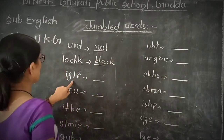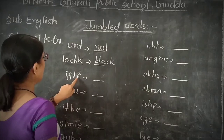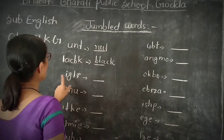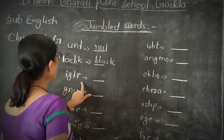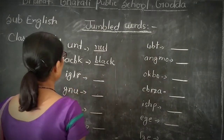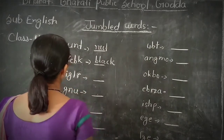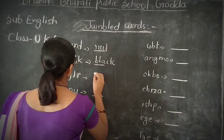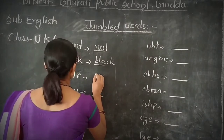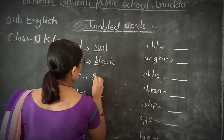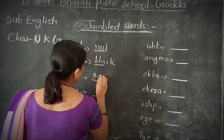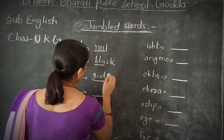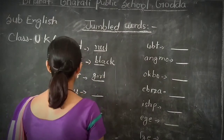I, G, L, R. This word is wrong. We will write the correct word here. G, I, R, L — GIRL. Good.